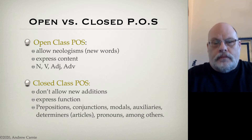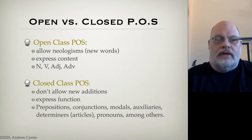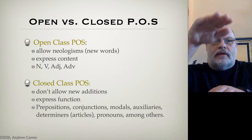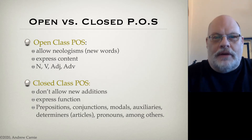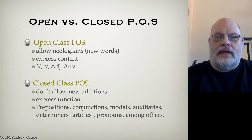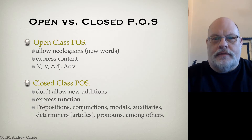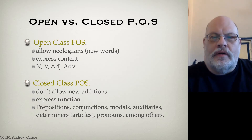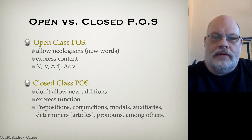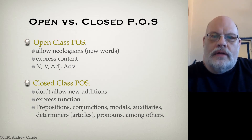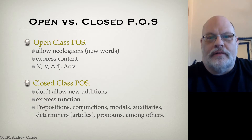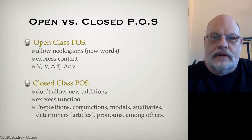For example, I could make up a preposition that I think would be really useful — one that means to be both over and under something at the same time. But nobody is ever going to pick up on that word, because it's a closed class part of speech. Similarly, we just don't make up new determiners, and we don't make up new complementizers. It does happen that new complementizers and determiners enter the language, but it's exceedingly rare.